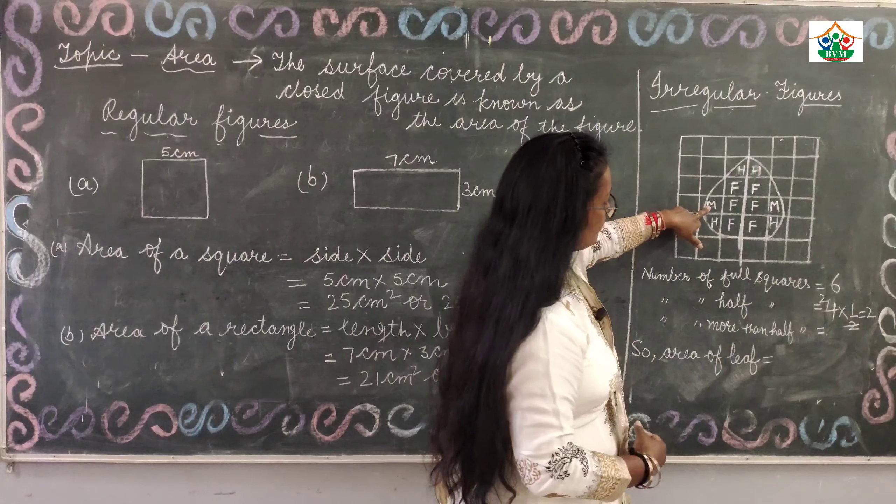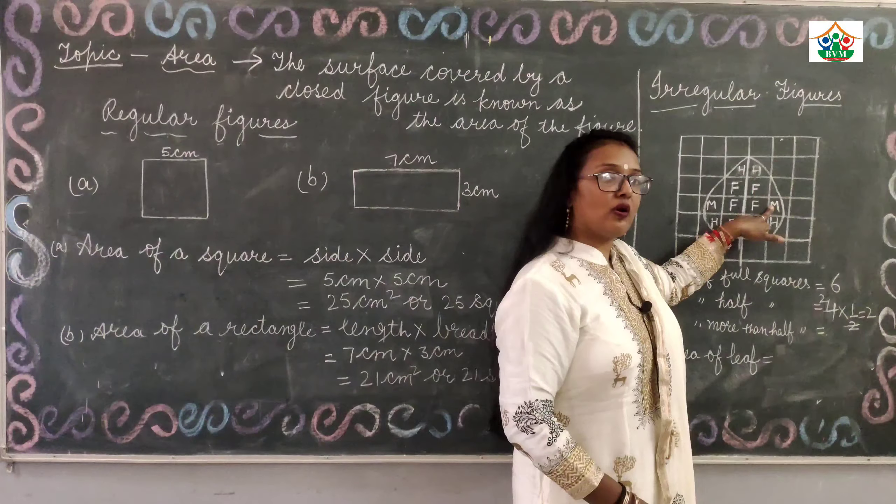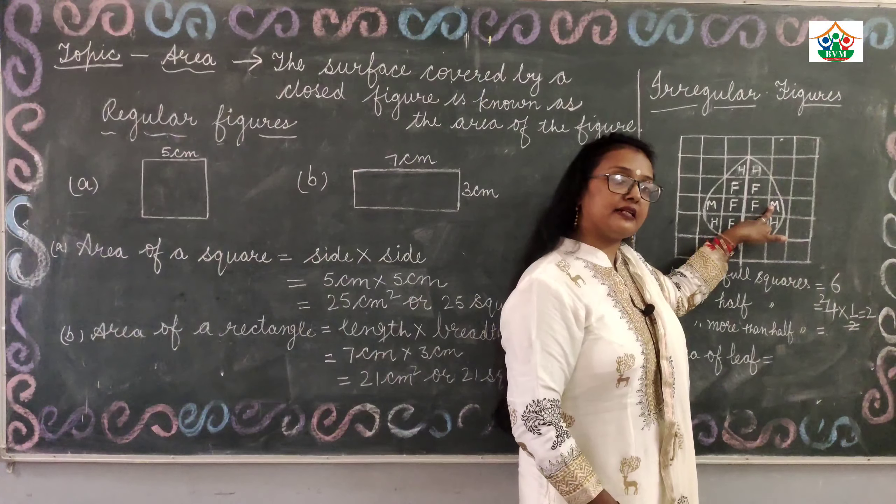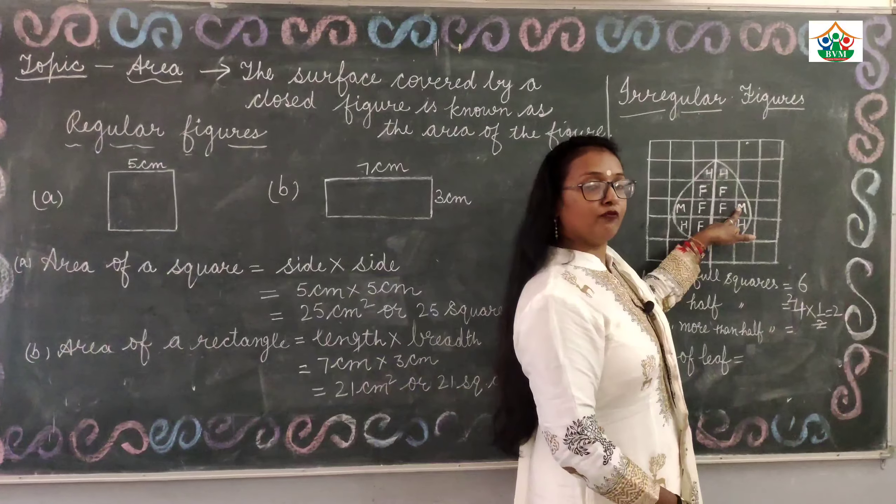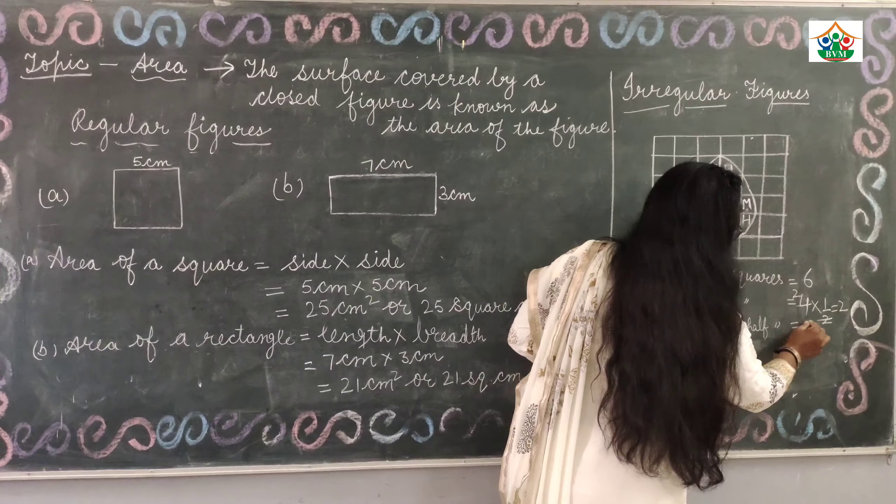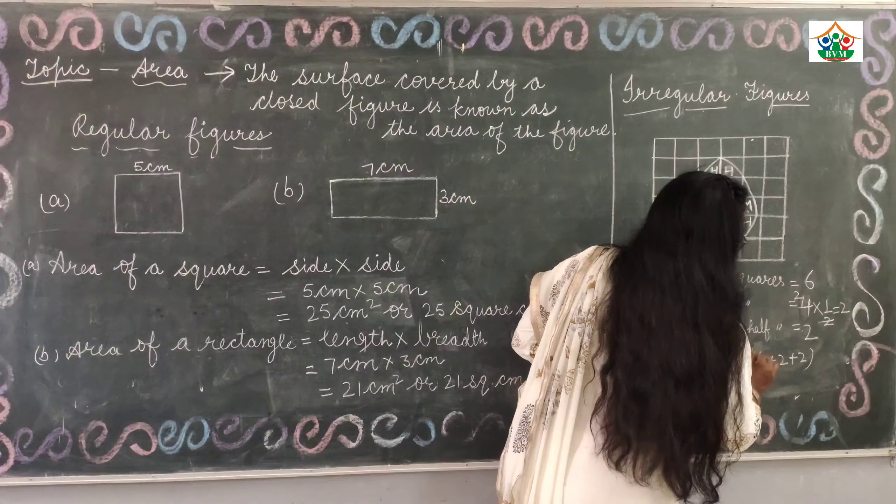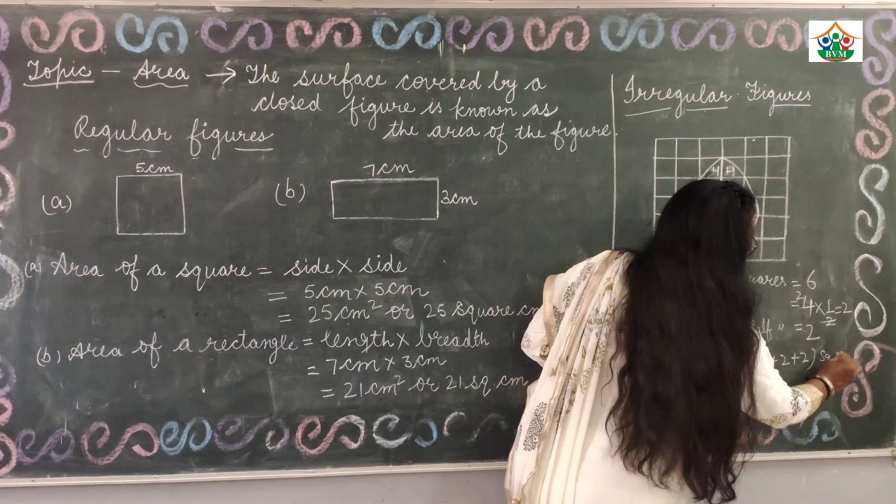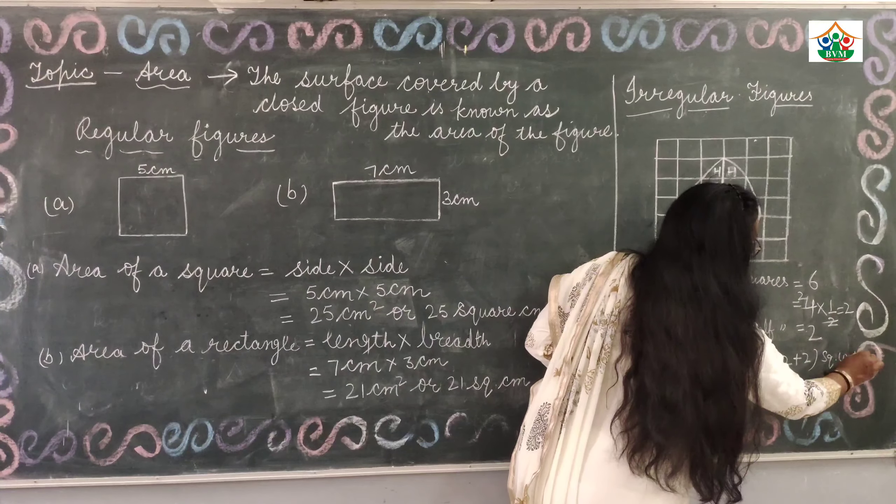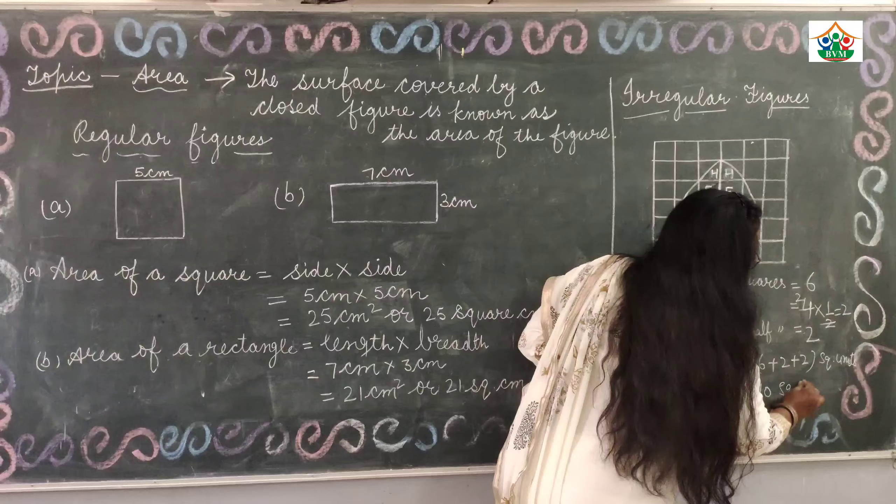After that, more than half. More than half: 1, 2. We will consider those squares that are more than half, we will consider them 1 full square. 1 and 1 equals 2. So, 6 plus 2 plus 2 square units equals 10 square units.